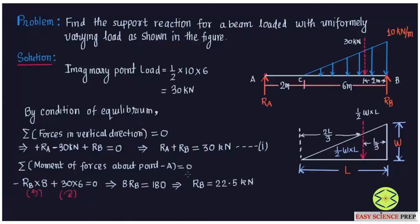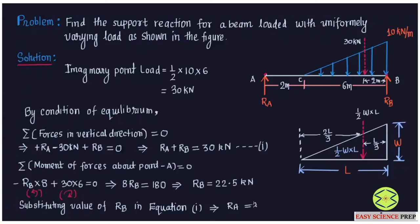Substituting the value of RB into equation 1: RA + 22.5 = 30, so RA = 30 − 22.5 = 7.5 kilonewtons. We have now found both support reactions: RA = 7.5 kN and RB = 22.5 kN.